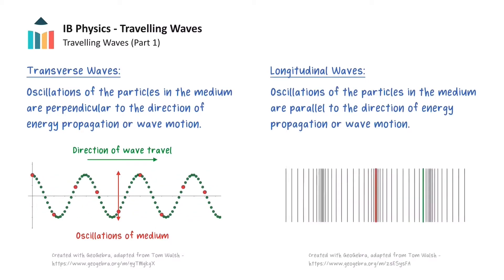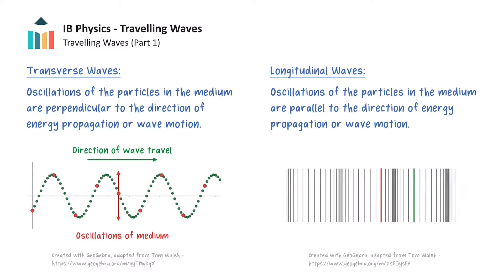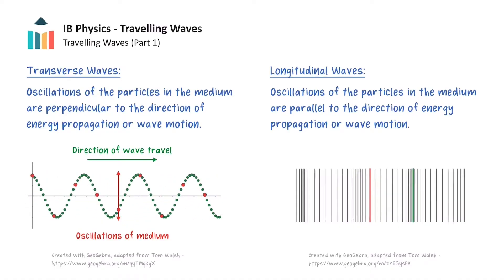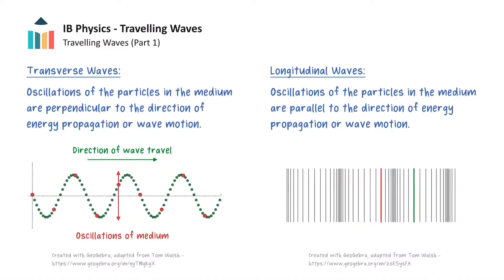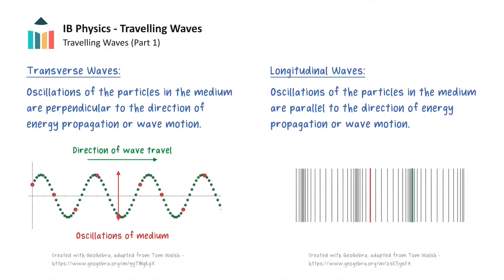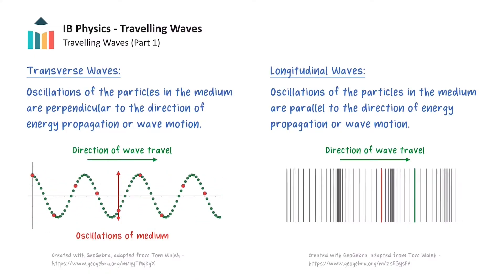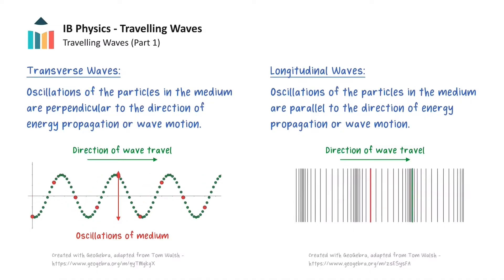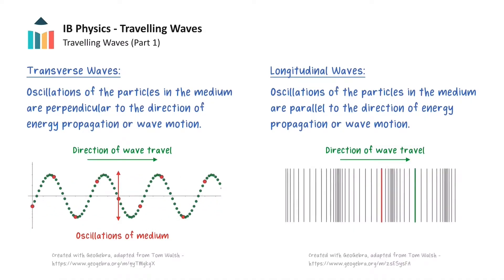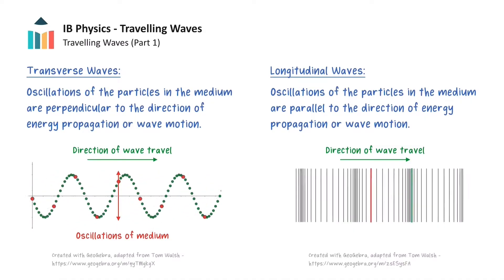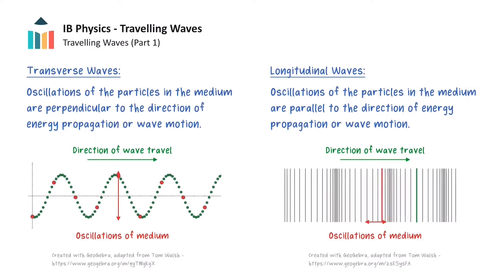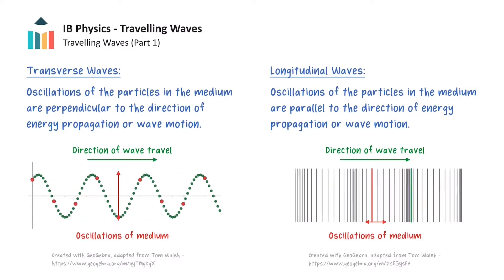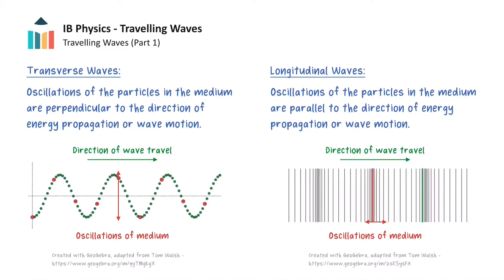It is also possible to have a wave that causes the particles of the medium to oscillate parallel to the direction of wave motion. This type of wave is called a longitudinal wave. Once again, the direction of wave travel is from left to right across the screen. But in this case, if we look at one of these individual lines within the medium, like this red one here, we can see that it is just oscillating horizontally in the same direction as the wave travels.